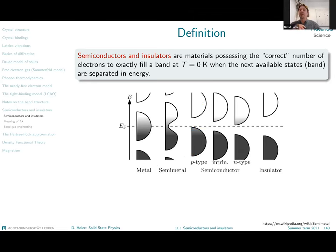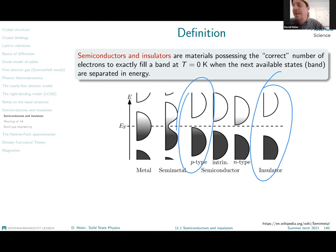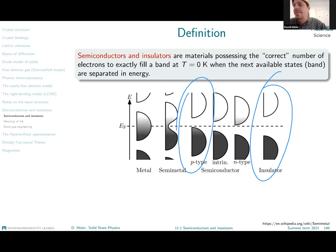You may ask: what is the difference between a semiconductor and an insulator? The answer is, it depends on whom you ask. People who work with silicon and germanium often define a semiconductor as a material with a band gap around 0.7 to 1.5 electron volts, and for them an insulator is anything above four or five electron volts.